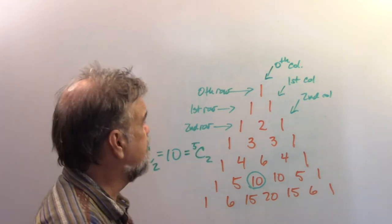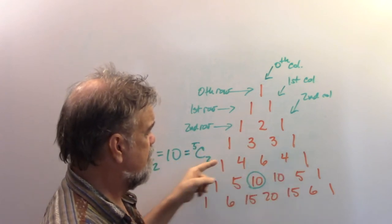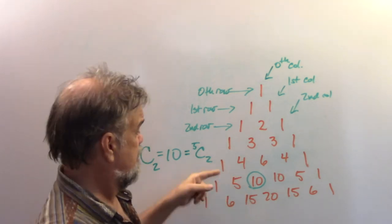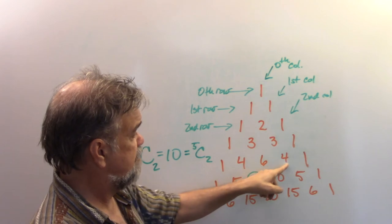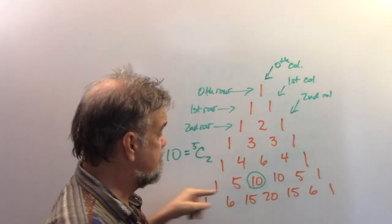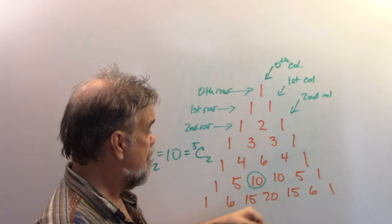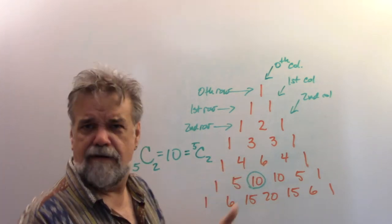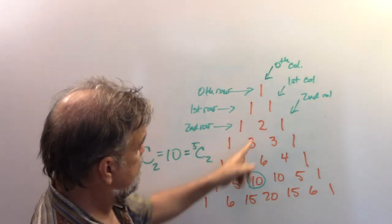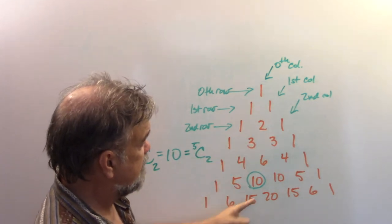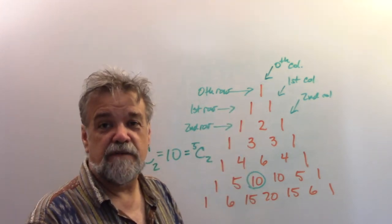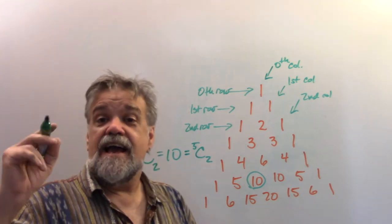There are all sorts of patterns in Pascal's triangle. For example, if you add up all the numbers in a row, you get a power of 2. In the fourth row: 1 + 4 + 6 + 4 + 1 = 16, which is 2 to the fourth. The columns also form linear, quadratic, cubic, and quartic patterns. In fact, when Newton was sent home from Cambridge during the plague, he analyzed this triangle and explored what rows between rows would look like.